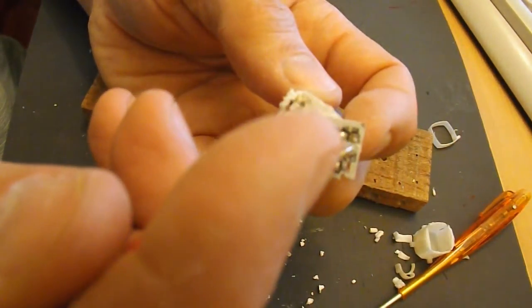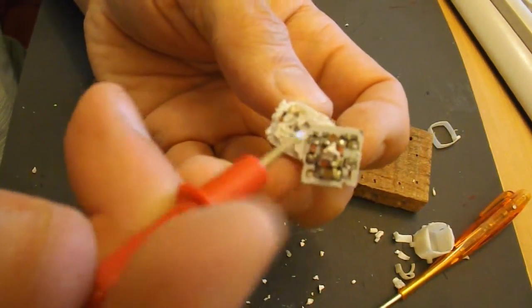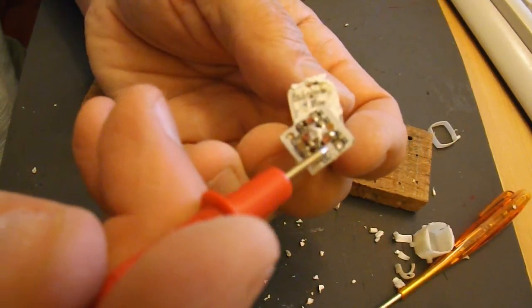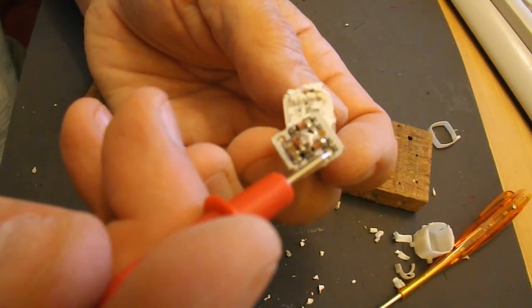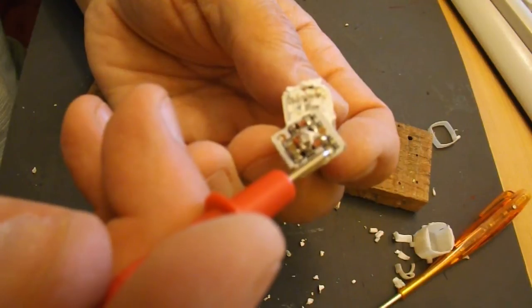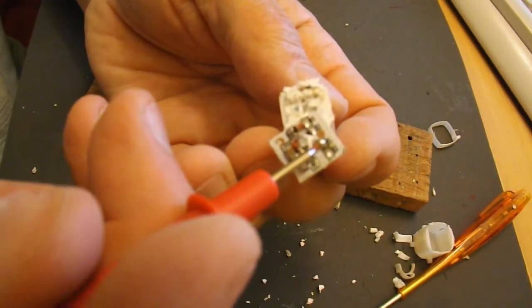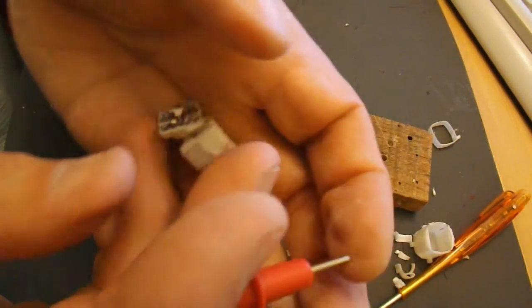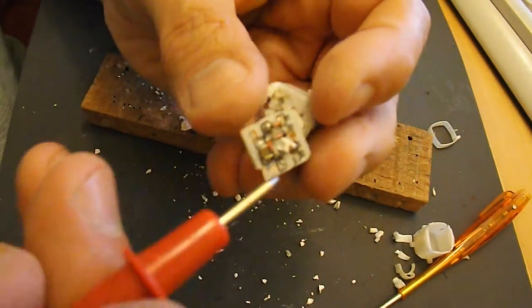One of the surface-mounted components is now just there. I think that says D3, so that's probably a diode, which is logical. It's probably a rectifier bridge there.